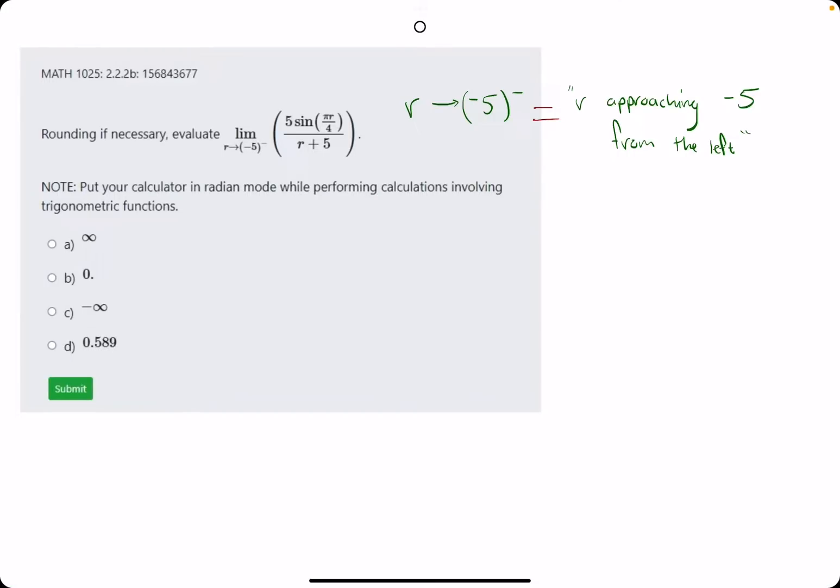Okay. Shout out to Iris for sending me this problem. In this problem, they're asking us to find the limit as r approaches negative 5 from the left.